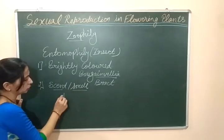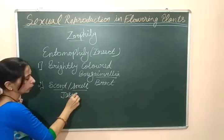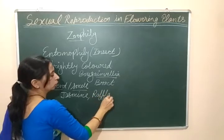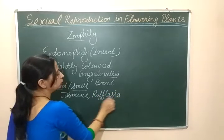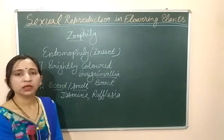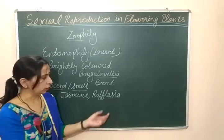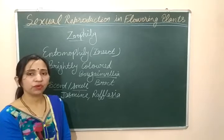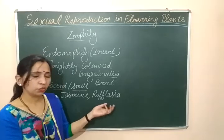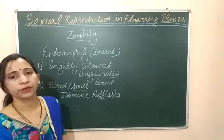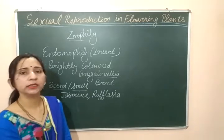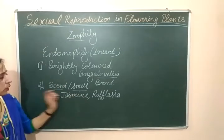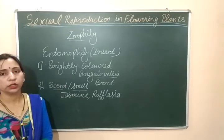One more example is jasmine, and another is Rafflesia. The Rafflesia flower gives a very bad smell, like rotten meat or rotten flesh. But the insects which help in pollination of Rafflesia are attracted towards the flower due to its bad smell. So this is an example where scent or smell plays a very important role in pollination.